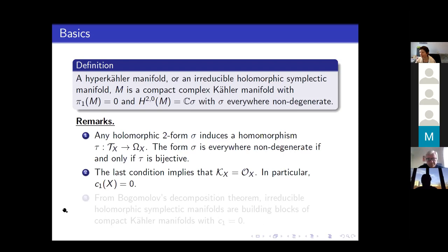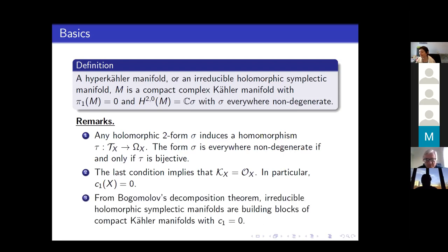There is Bogomolov's decomposition theorem, which says that if you have first Chern class zero, then the manifold decomposes as a product of irreducible blocks which are Calabi-Yaus, hyperkählers, and tori. So hyperkähler manifolds are building blocks of this decomposition.